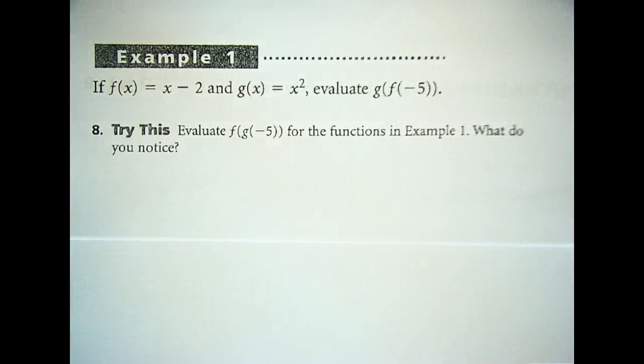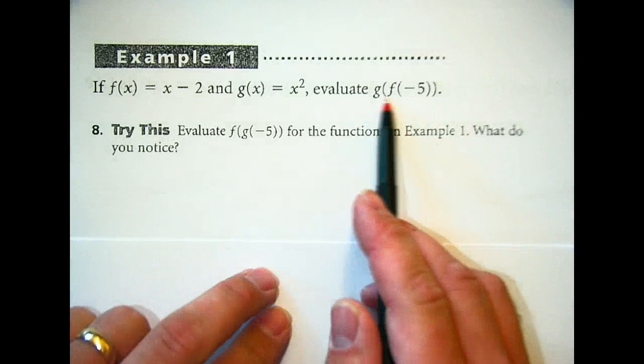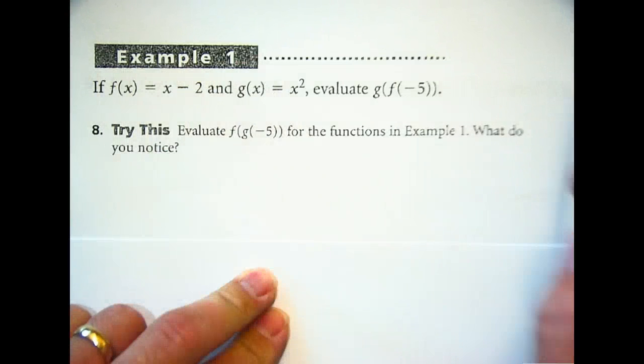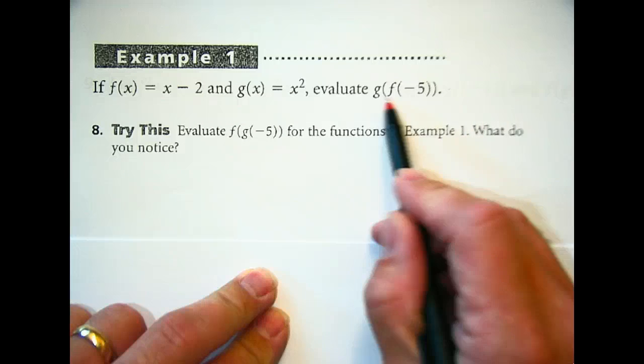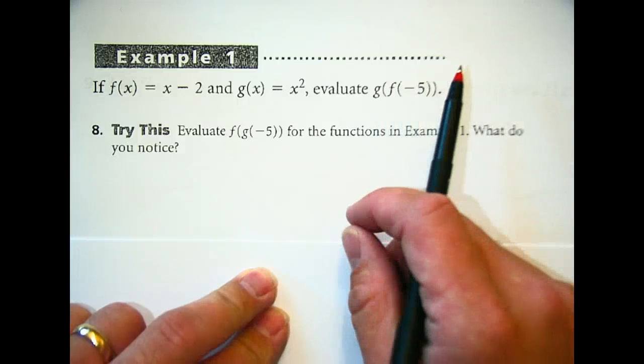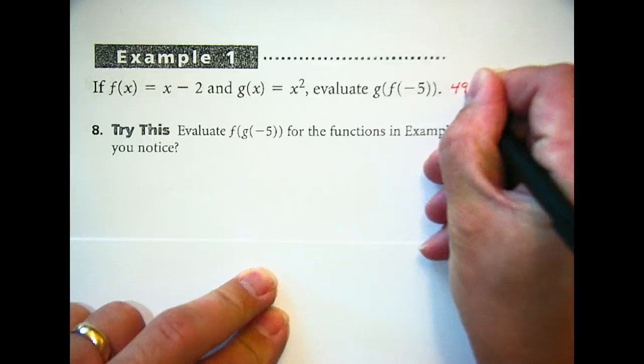In this one it says f(x) = x - 2, and g(x) = x². Evaluate g(f(-5)). Now g(f(-5)), this is in Example 1. What answer did they get for that? What was g(f(-5))? It was 49? Anyone second that? Thank you.